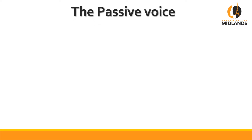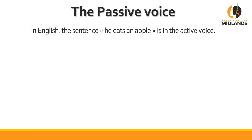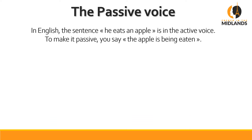Before we dive in, let's find out what the passive voice actually is. Let's go back to English. If you say 'he eats an apple', that's the active voice — he's the one eating the apple. To make it passive, you say 'the apple is being eaten', so the apple is having something done to it. That's why it's called passive.